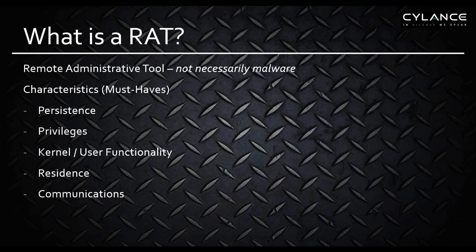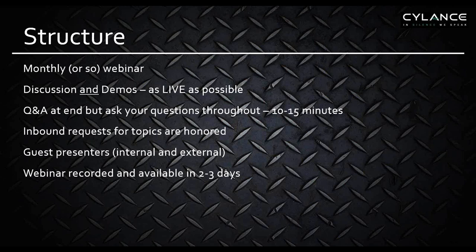There are some basic characteristics of a remote administrative tool. First, there must be a persistence mechanism. It must have privileges for use at the level that you or the attacker intends to use it. It must have the ability to call Windows kernel functions from user space, or similar in Unix. It must be resident somewhere in the file system or within a process as a temporary resident. And it must have communication capability — otherwise it doesn't have the remote capability.